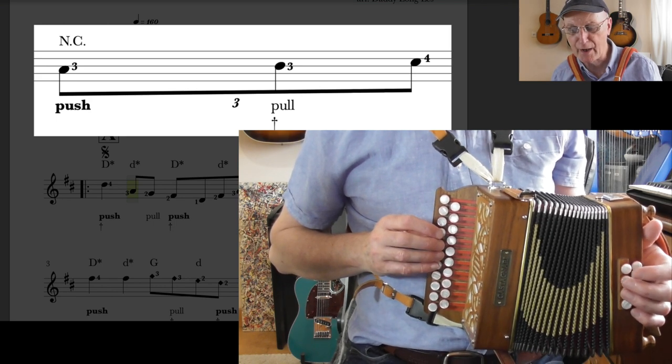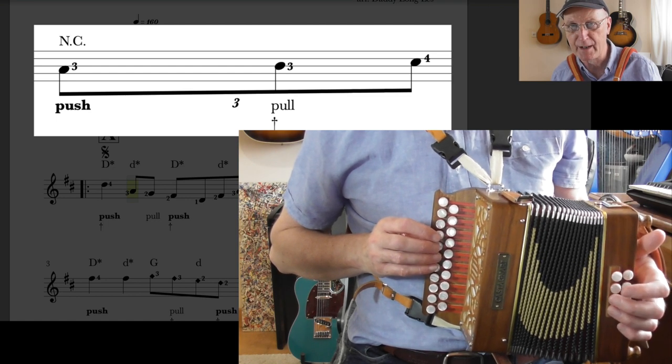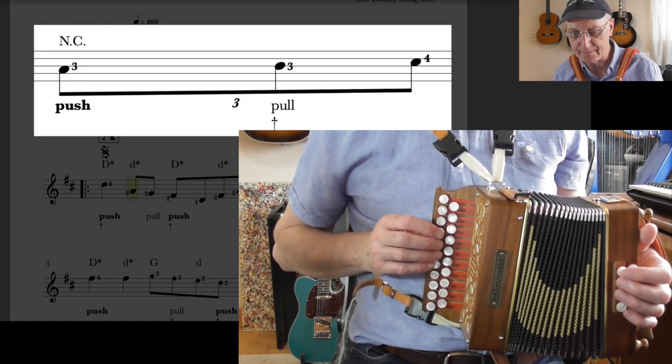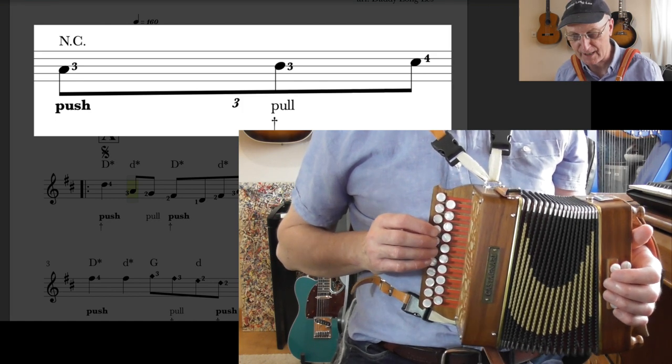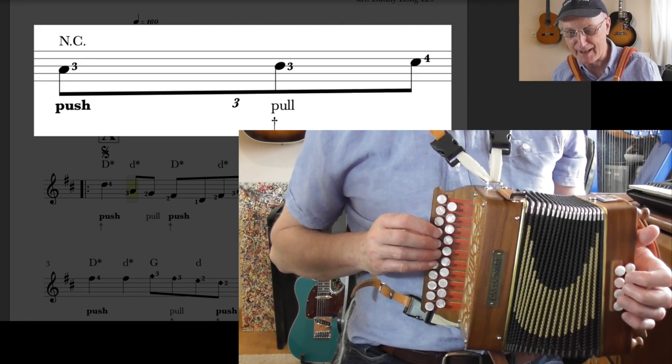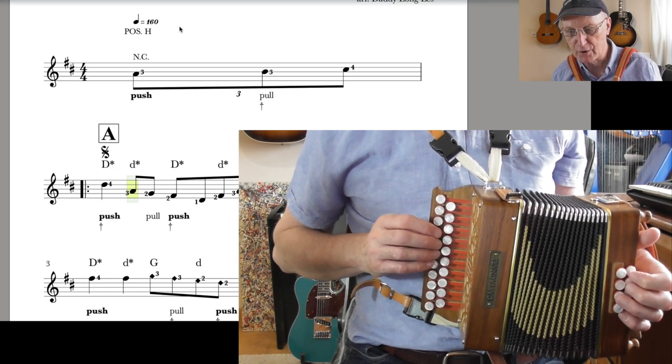Now you're going to count that one, two, three, four and a. So four and a, it's a triplet. That's what that three underneath the beam means there. And yeah, it's a fairly tricky start because you've got to go into that next note, which is D on the first full bar. So that's your pickup bar.